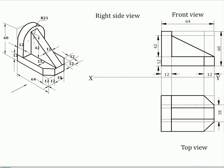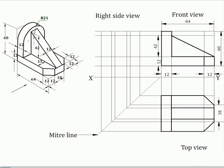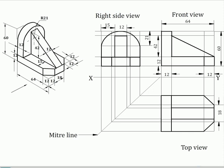Now to draw the right side view, it will come to the left of the front view. Draw the miter line and draw projectors horizontally from the front view and through the miter line from the top view and complete the right side view. The web portion will be seen as a rectangle of size 42mm by 12mm.